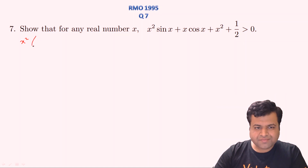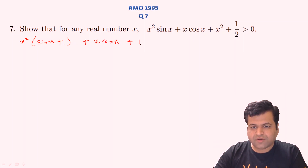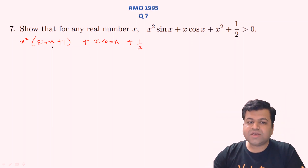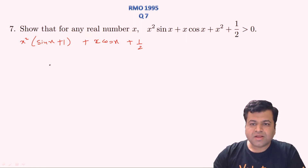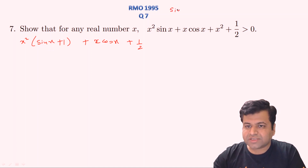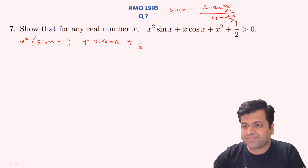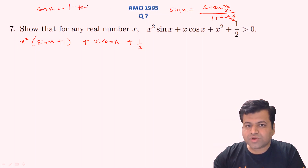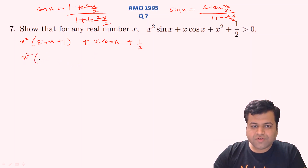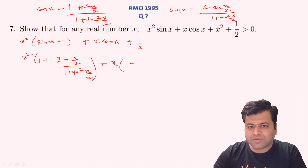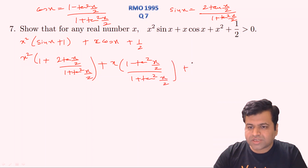First, let's collect the coefficient of x², which is (sin x + 1), giving us x²(sin x + 1) + x·cos x + ½ > 0. This is not a standard quadratic because x, sin x and cos x are all variables. Let's substitute the half-angle formulas: sin x = 2·tan(x/2) / (1 + tan²(x/2)) and cos x = (1 − tan²(x/2)) / (1 + tan²(x/2)). Substituting these, we get x²·(1 + 2tan(x/2)/(1 + tan²(x/2))) + x·(1 − tan²(x/2))/(1 + tan²(x/2)) + ½ > 0.